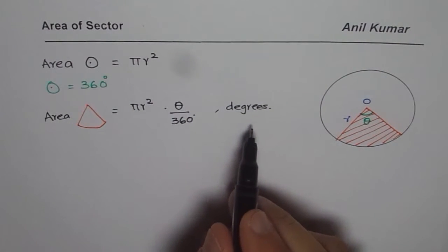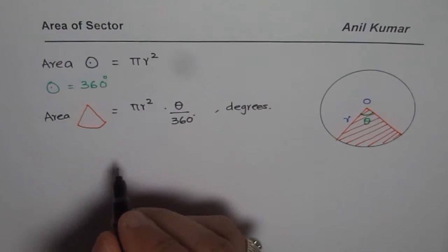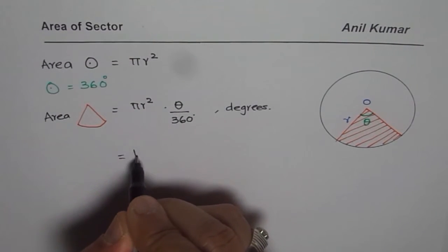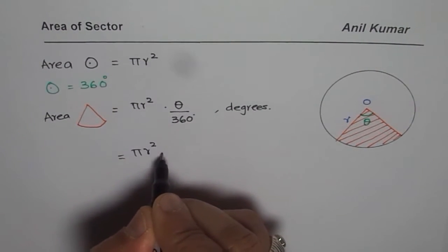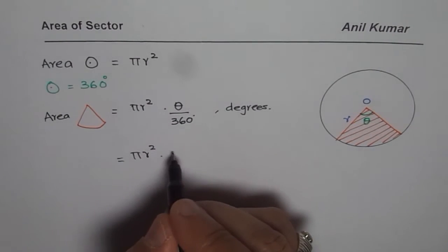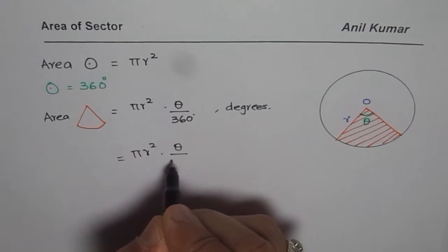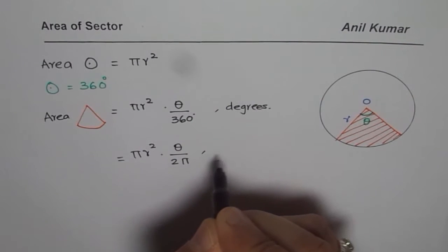If you do measurements in radians, you will get the same formula as πR². In radians one full circle is 2π. So you get θ divided by 2π. That is in radians.